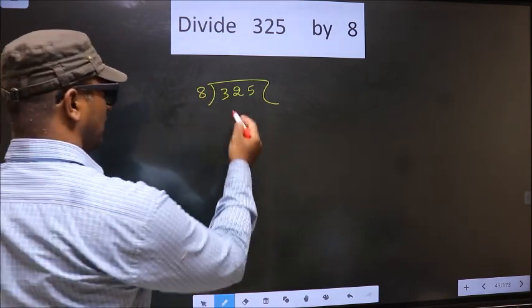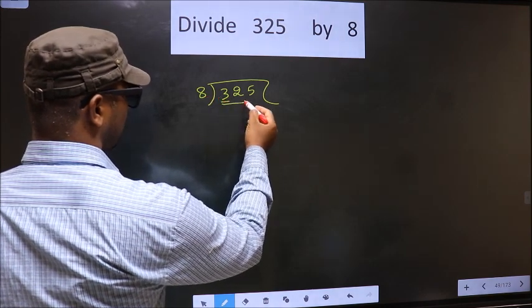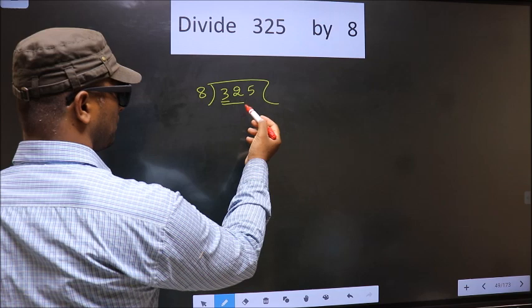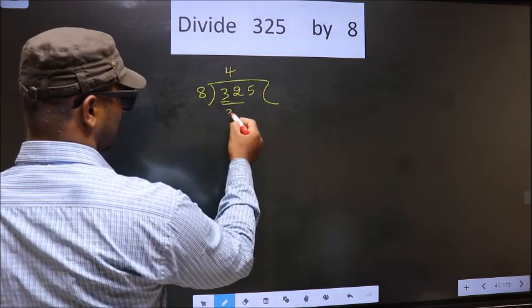Now here we have 3. 3 is smaller than 8, so we take 2 numbers, that is 32. When do we get 32 in the 8 table? 8 times 4 is 32.